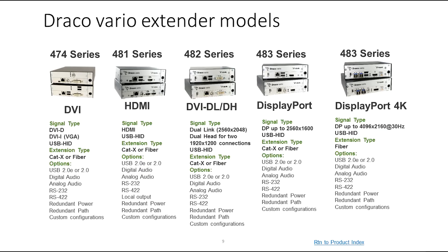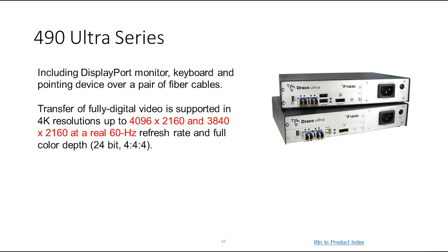The 474 series is DVI-D. The 481 is HDMI. The 482 is DVI-DL, which is dual link, or DVI-DH, which is dual head. The 483 series is DisplayPort and 4K as well. Or the 490 Ultra series, which is full 4K resolutions, 4096 by 2160, and a real 60 Hz refresh, and a full color depth of 24-bit.